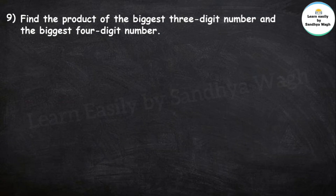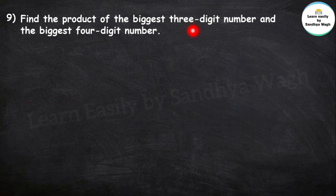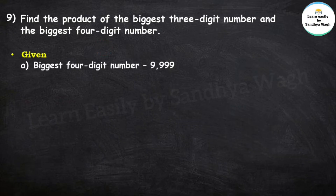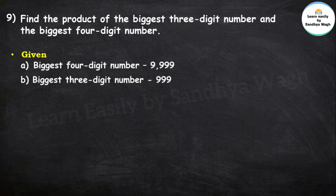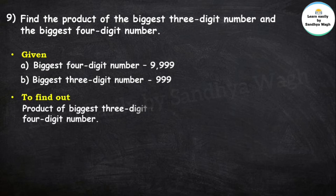Next word problem: Find the product of the biggest 3-digit number and the biggest 4-digit number. The biggest 3-digit number is 999 and the biggest 4-digit number is 9,999. Given information: biggest 4-digit number = 9,999; biggest 3-digit number = 999. What do we have to find out? The product of the biggest 3-digit and 4-digit numbers. For that we will do multiplication.